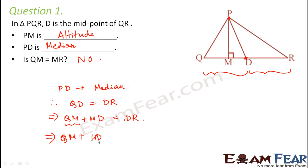So if we add MD on both sides, what do we get? We get QM plus 2MD is equal to what? DR plus MD, which is nothing but MR.